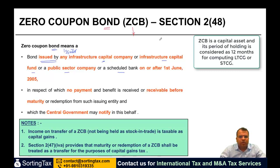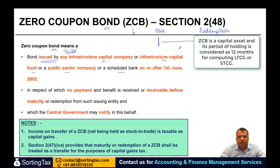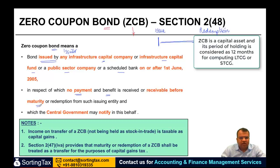Zero-coupon bonds — let me explain this. There is one issue date and one redemption date. During the period between issue and redemption, no payment and no benefit is received or receivable before maturity or redemption of such issuing entity.